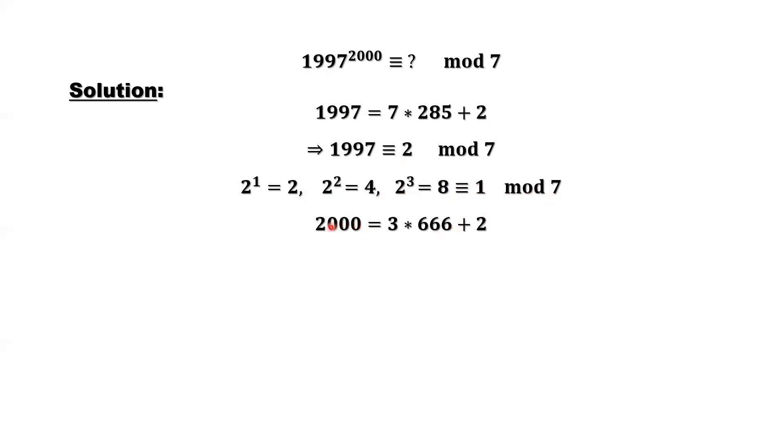In the power 2000, inside how many 3s can we group, 3 in each group? We have 666 threes plus 2 extra numbers.